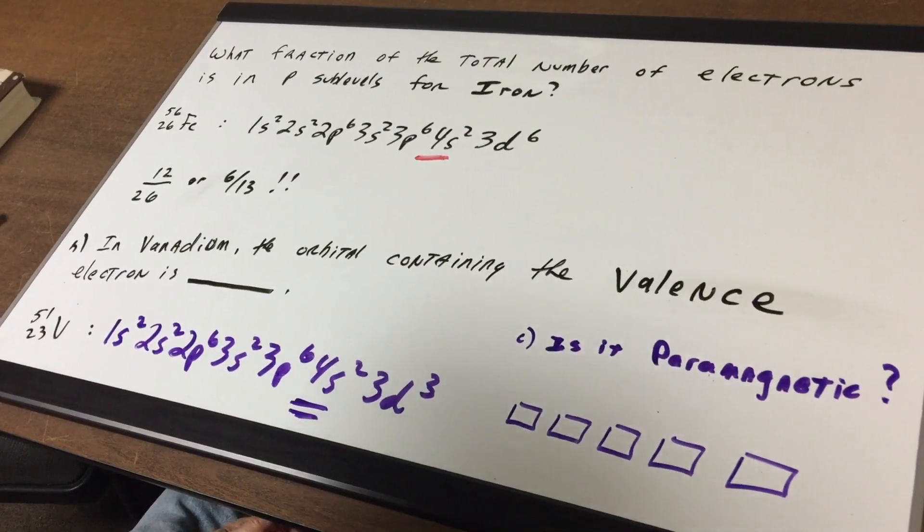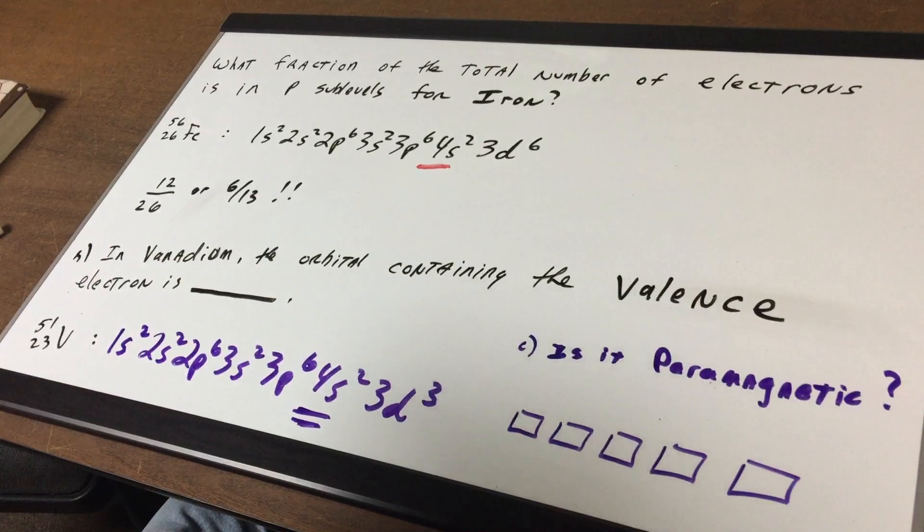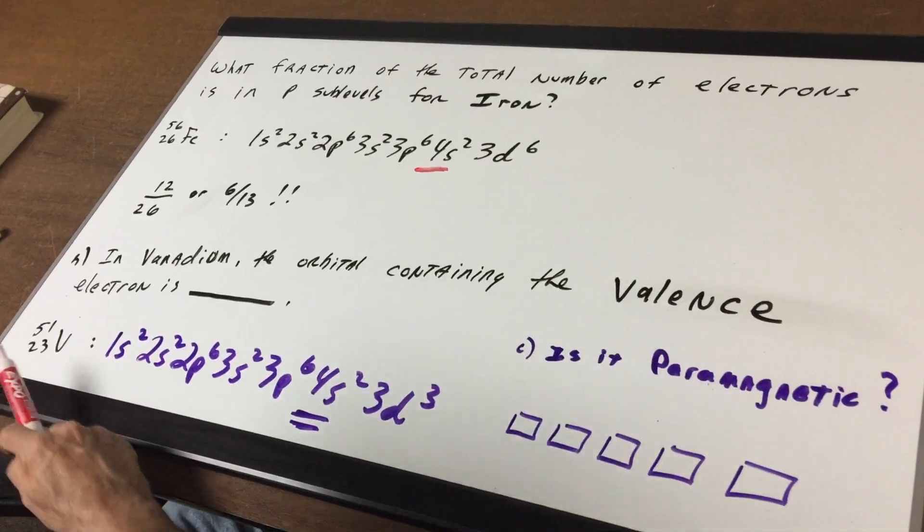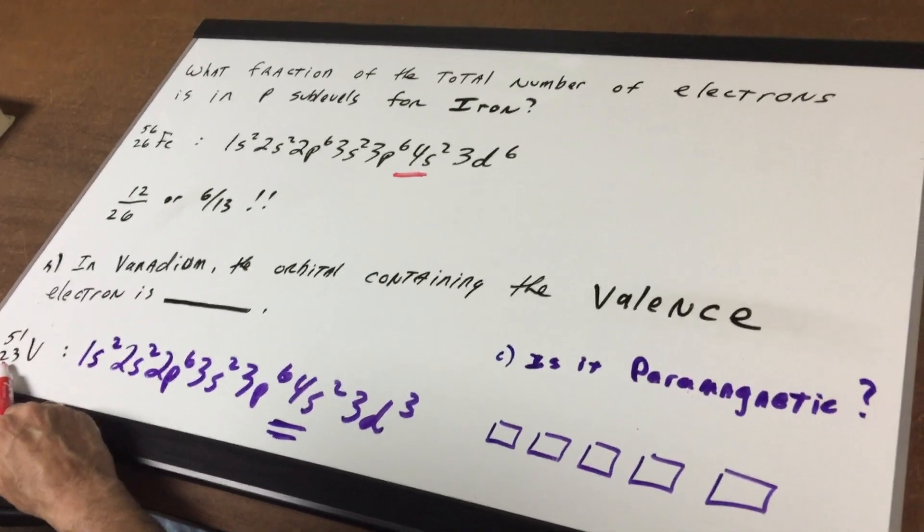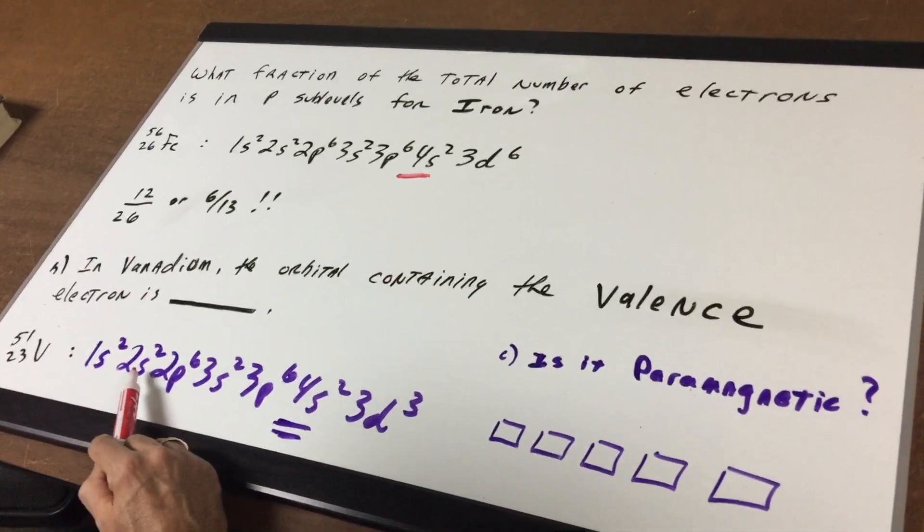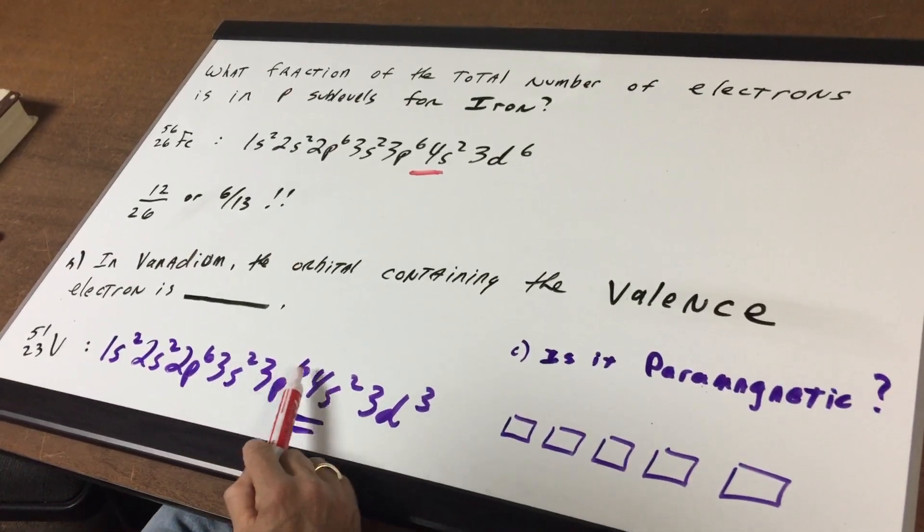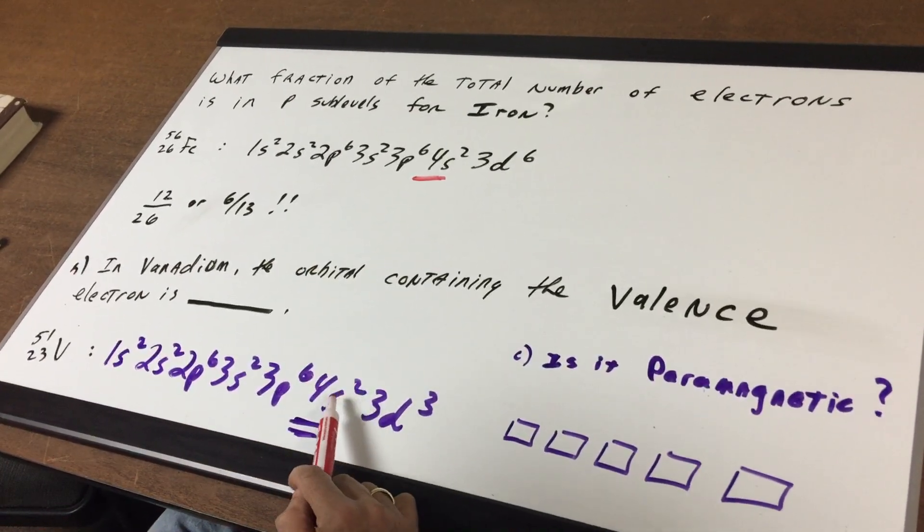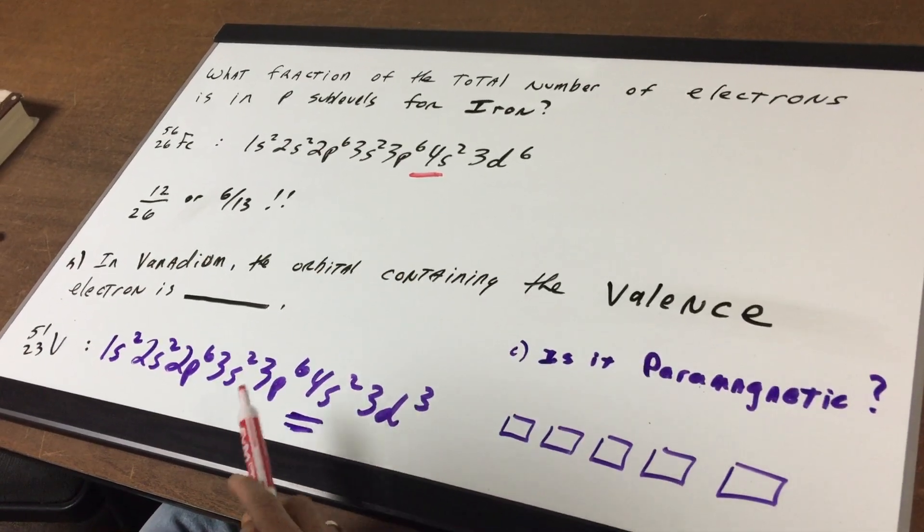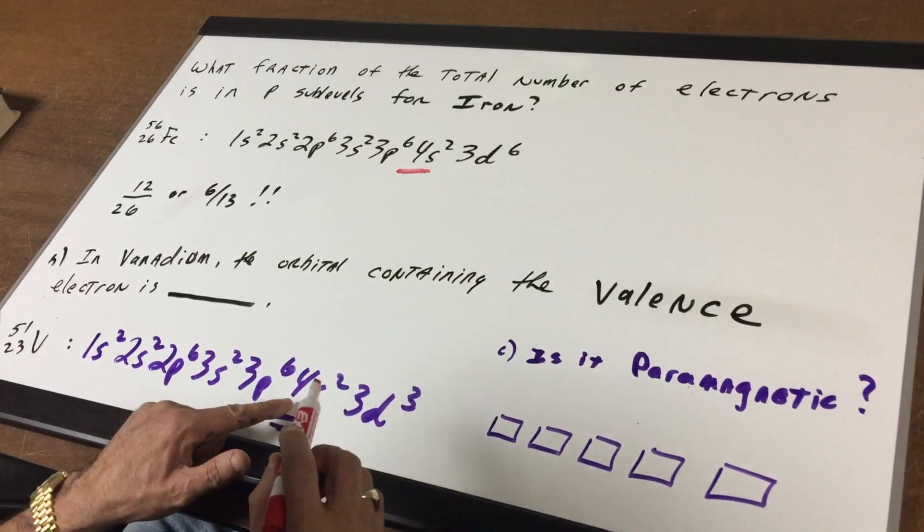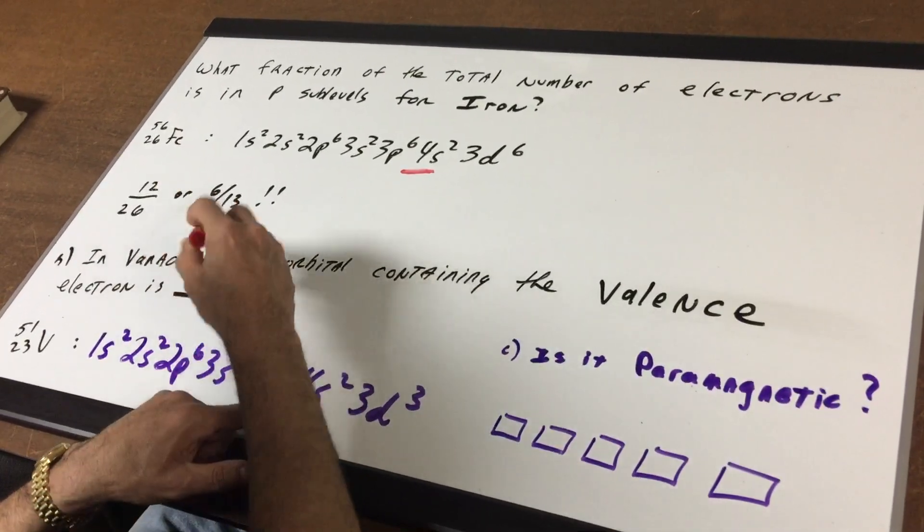Let it be in vanadium, the orbital containing the valence electron is blank. Well vanadium is 5123V and I'm gonna shoot for the number 23 so it's 1s2, 2s2, 2p6, 3s2, 3p6, 4s2 that gives me 20 and 3d3. So the orbital containing the valence shell is the outermost which would be the 4s.